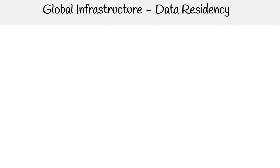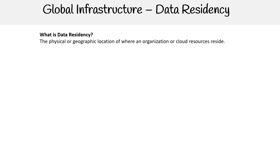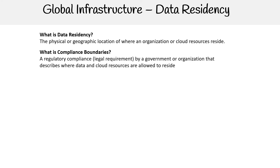This is Andrew Brown from ExamPro, and we are looking at data residency for Google Cloud's global infrastructure. So what is data residency? It's the physical or geographic location of where an organization's or cloud resources reside. The reason we care about this is so that we can have compliance boundaries — these are regulatory compliance, legal requirements by government or organization that describe where data and cloud resources are allowed to reside.